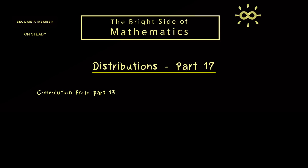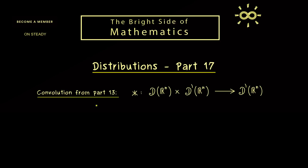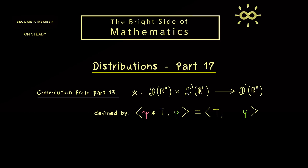Let's start by recalling how we defined the convolution in Part 13. There, the convolution denoted by star was a bilinear map where the first entry takes a test function and the second one a distribution. The new distribution that comes out is denoted by psi star t, where we can define it by saying how it acts on test functions phi. Formally, we push the convolution to the right hand side, so t is applied to a convolution of two test functions.